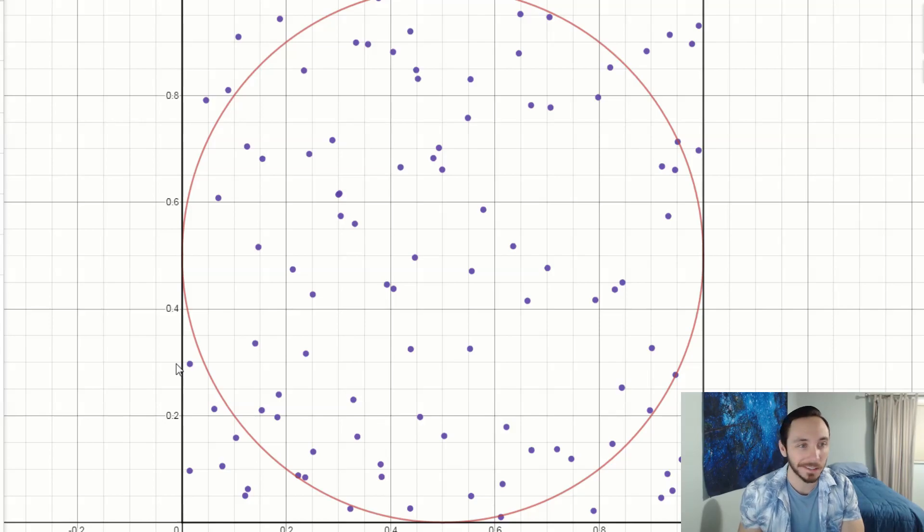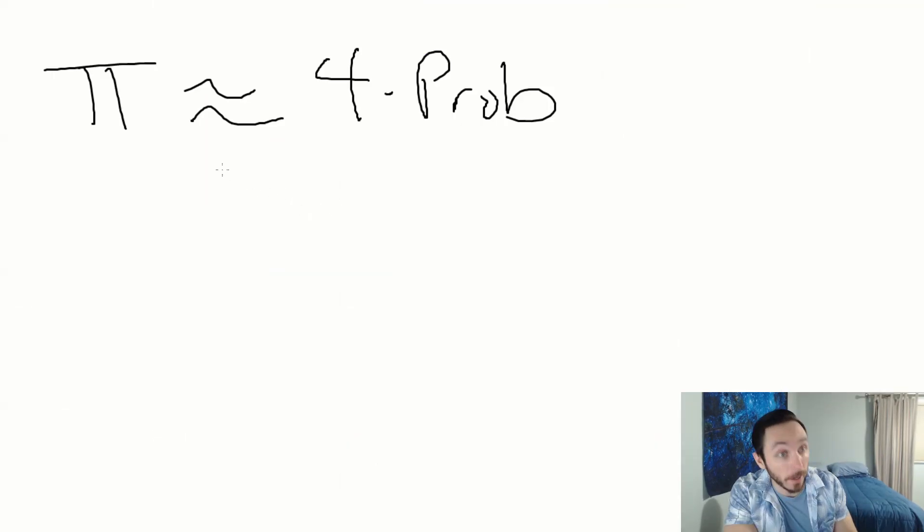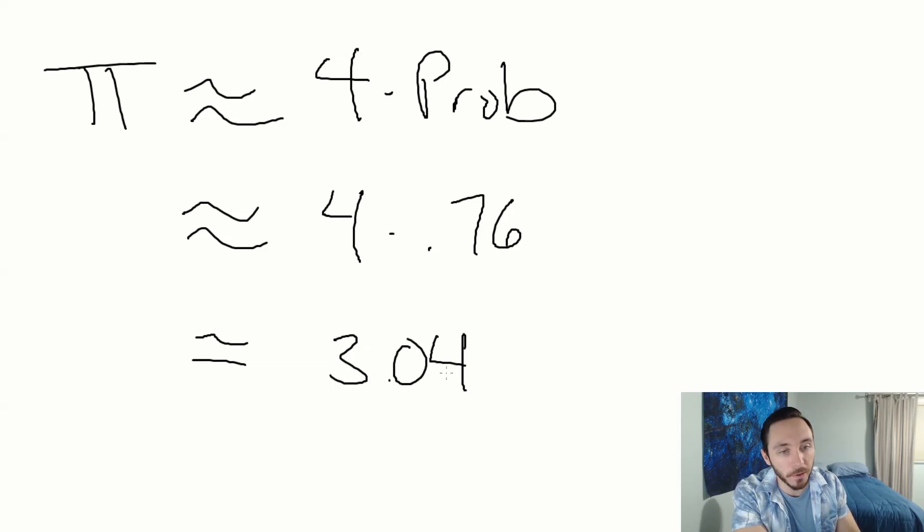Hopefully I counted right. 24 is what I got there. So pi is 4 times the probability. In this case, we had a probability of 76%. If you multiply these together, you get 3.04. We're not happy with 3.04 because that's actually further away from our initial estimate, which was 3.2.